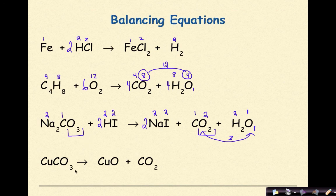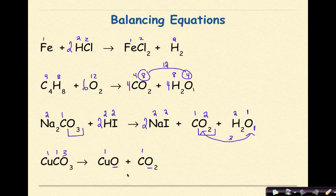Next equation: 1 Cu, 1 Cu; 1 carbon, 1 carbon; 3 oxygens on the reactant side — 1 oxygen here and 2 oxygens here on the product side. That's already balanced. We don't need to do anything to the coefficients here — just leave it as is.